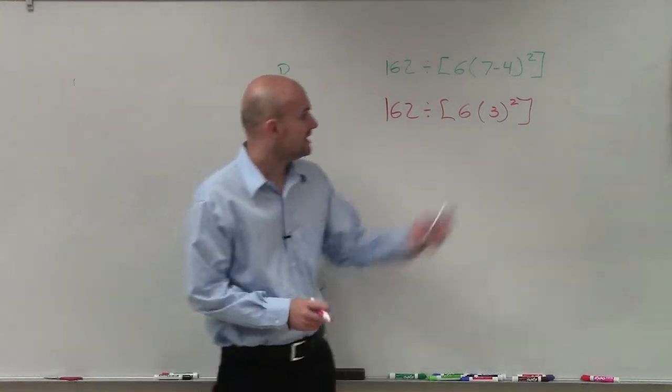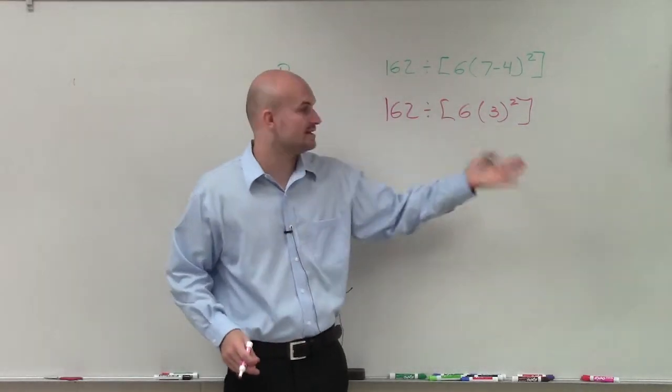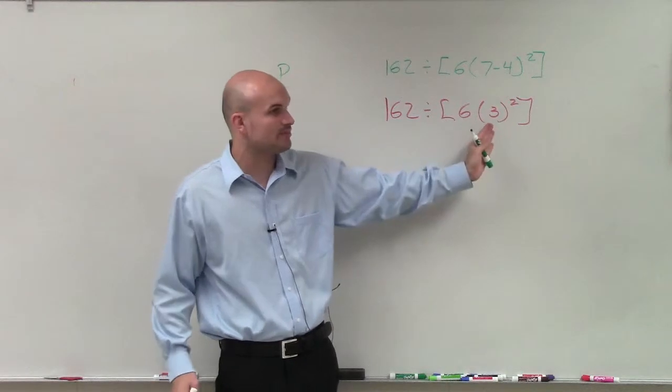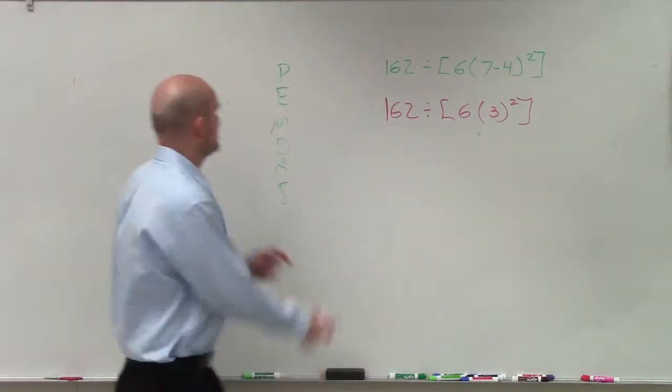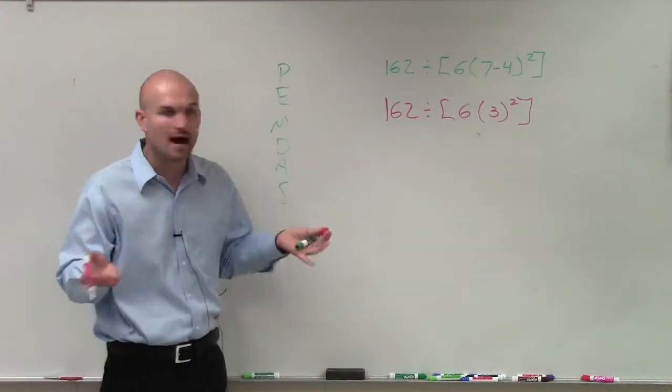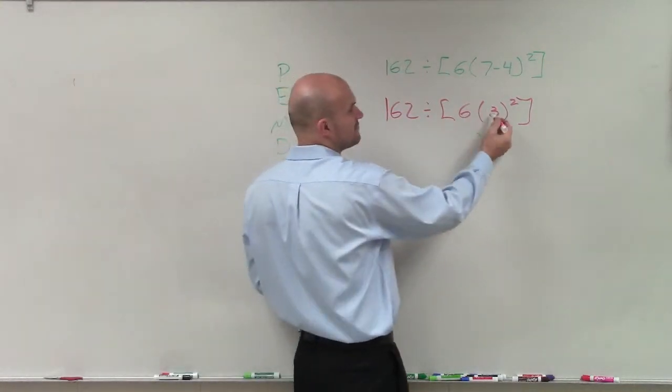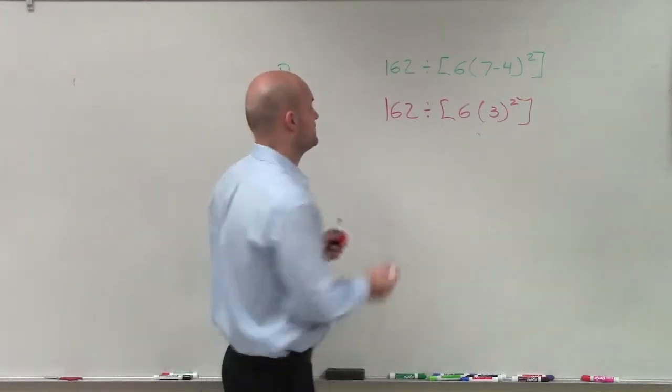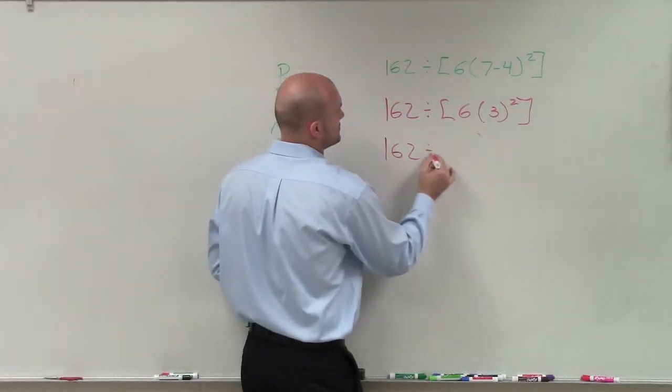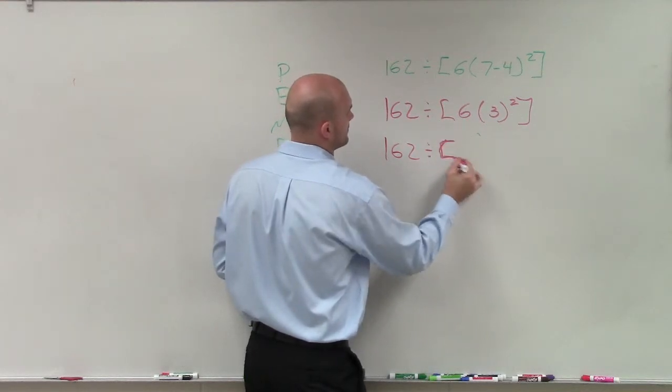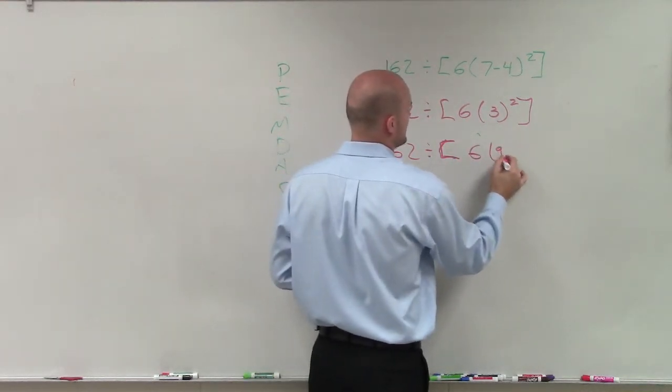All right, now inside my bracket, I keep on applying the next operation. So I already evaluated the parentheses. Now the next operation is exponents, or powers. So you can see I have 3 squared, which is going to be 9. So I do 162 divided by 6 times 9.